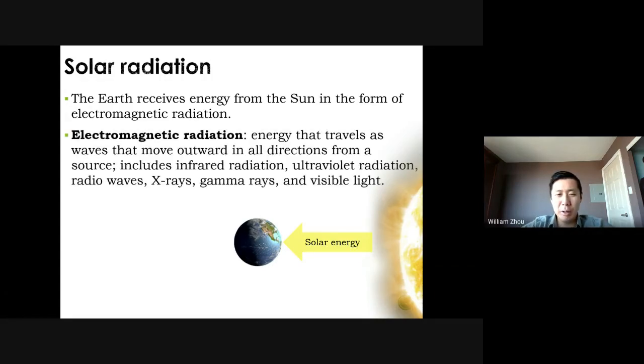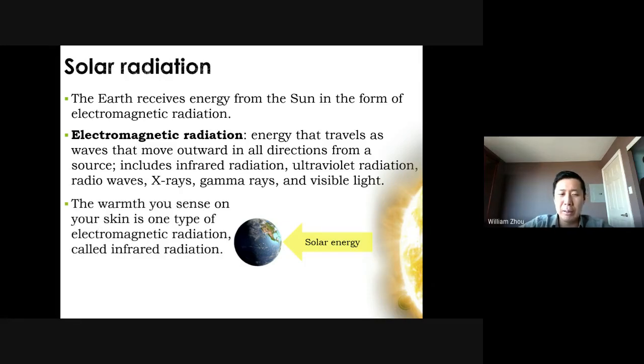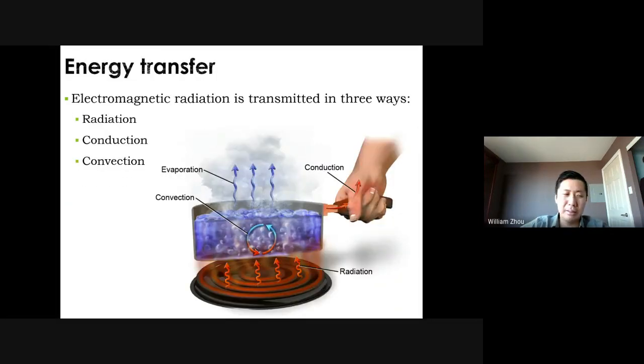The earth receives energy from the sun in the form of electromagnetic radiation. In the physics unit, we talked about what that is, basically light with different wavelengths, and one of those wavelengths is visible light. Heat that you detect is a form of infrared radiation, which is one of the radiations in the electromagnetic spectrum. There are three different ways in which this electromagnetic radiation can be transmitted: radiation, conduction, and convection. Radiation is light moving in space with no contact at all. Convection is heat moving in a fluid in a circle. And conduction is heat transferred through contact.